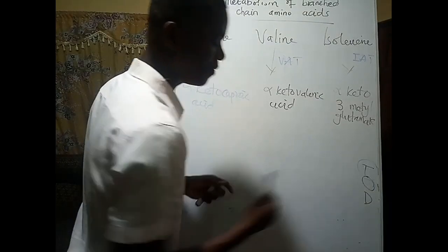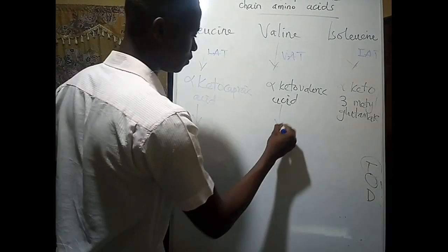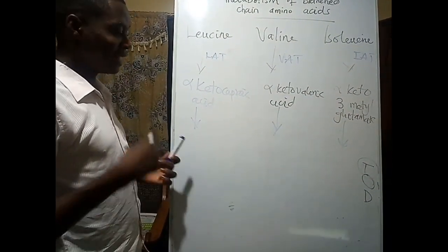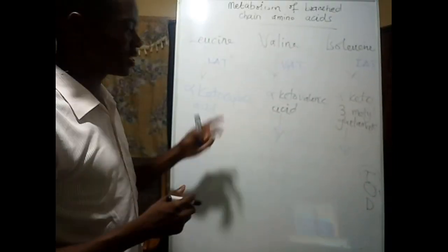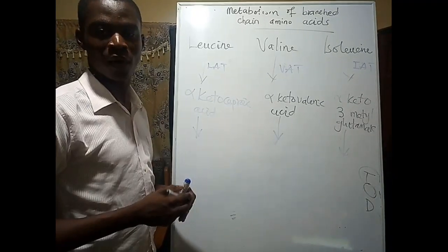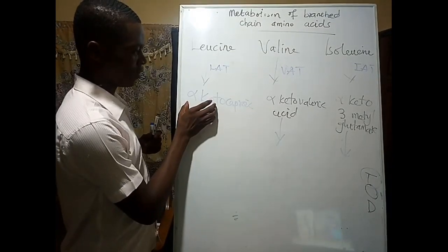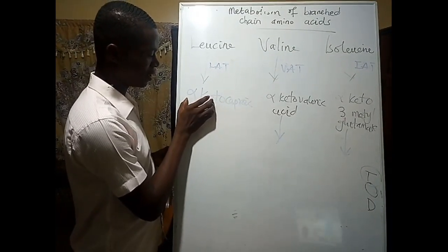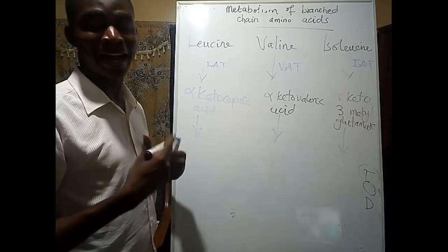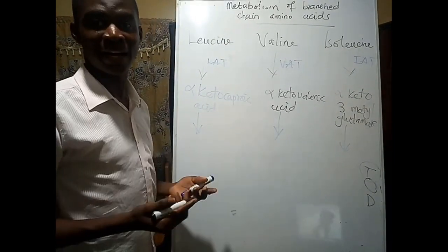Moving to oxidative decarboxylation, the enzyme responsible for catalyzing this step is generally called alpha-keto acid dehydrogenase. The name makes sense because the substrates from the previous step are all alpha-keto acids, and the enzyme is a dehydrogenase.